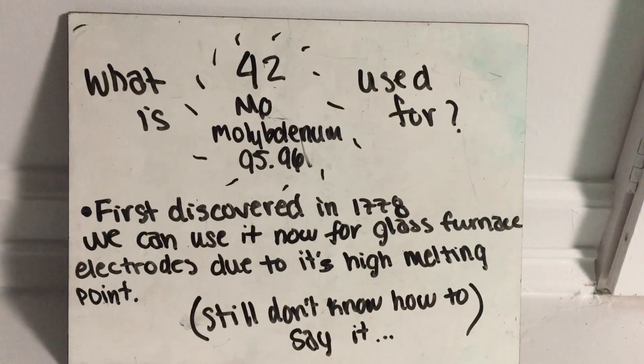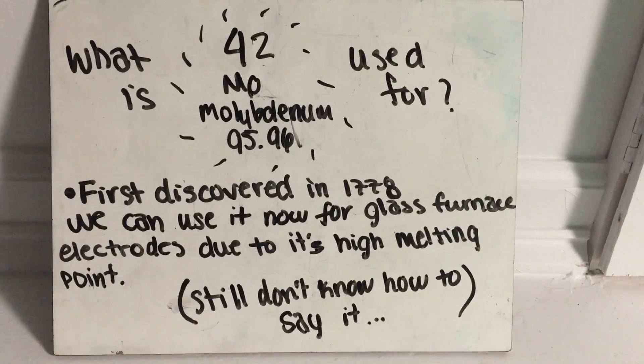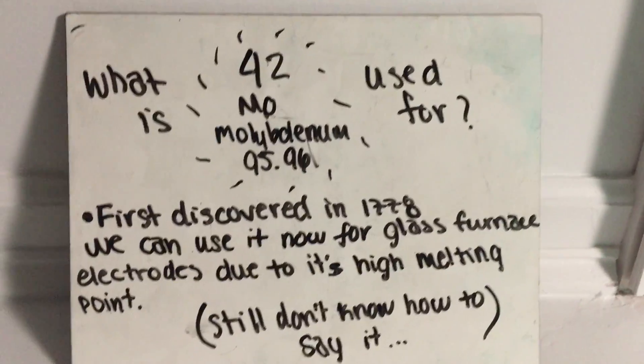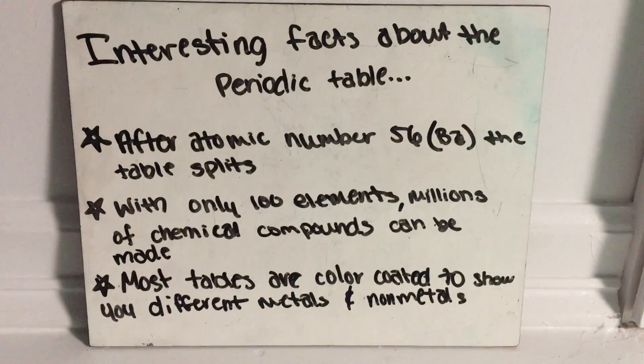First discovered in 1778, we use it now for glass furnace electrodes due to its high melting point. But I still don't know how to pronounce it. Interesting facts about the Periodic Table.